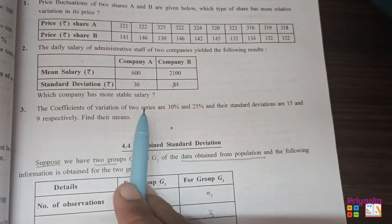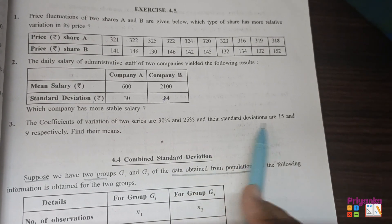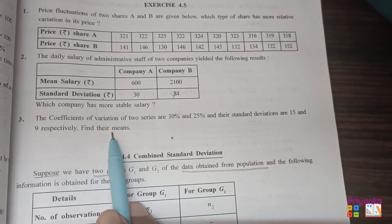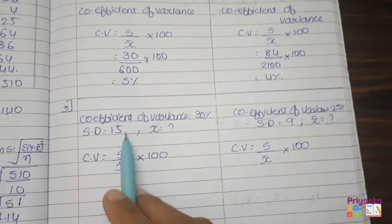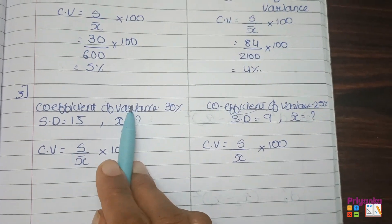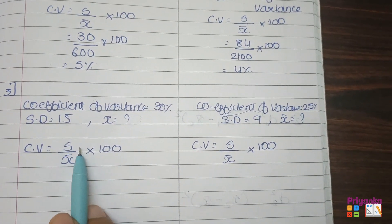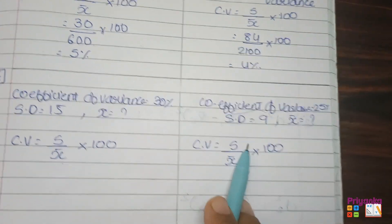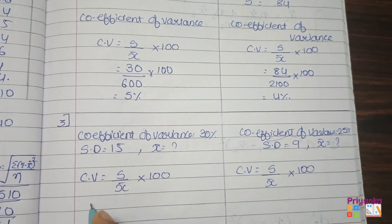The next question, number 3. The coefficient of variance of two series are 30% and 25%, and their standard deviations are 15 and 9 respectively. Now here they ask you to find the mean. So first let's take the information. Here we have coefficient of variance, that is CV is 30. Standard deviation is given - 15 - and they ask you to find out mean. Same for the another information. So let's keep the value.